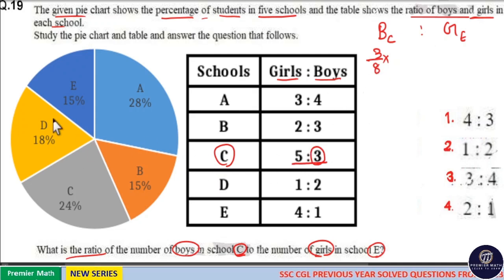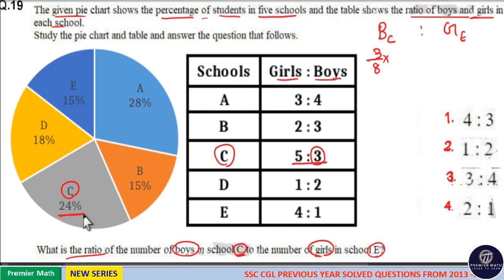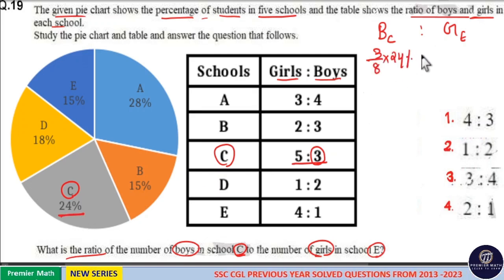Now in school C, the pie chart shows there are 24 percentage of total students. So the number of boys in school C is 3 by 8 into 24 percentage.